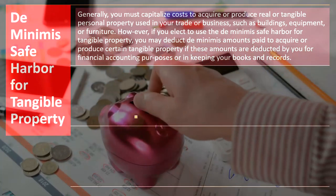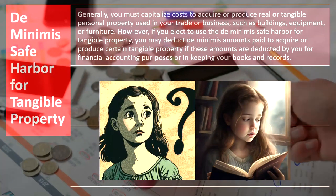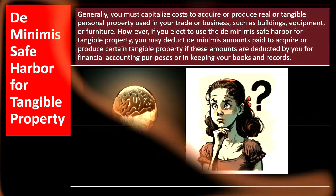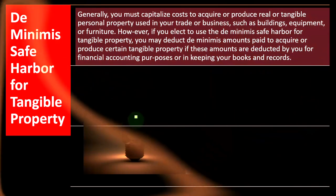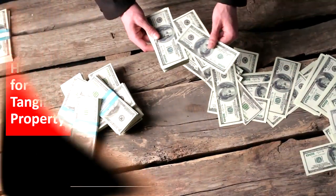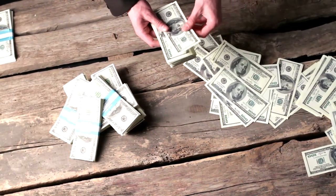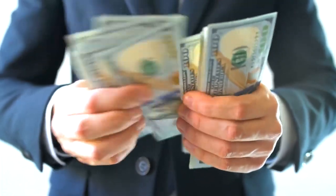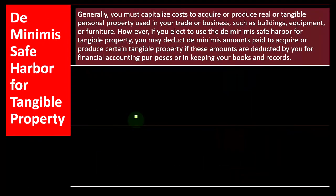From a bookkeeping standpoint, you might have an expense account for supplies or an expense account for repairs and maintenance, and you might run across items where the question comes to mind as to whether you can just expense them when you purchase them, or whether you have to put them on the books as an asset. If you bought supplies and used them in the current time frame, that would just be an expense.